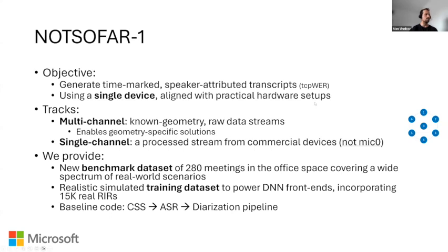We have two tracks. One track is the multi-channel track where you have an array with seven microphones and the geometry is known, so you can actually train for this setting. The second track is single channel, and here we emphasize real settings where we don't use just one single microphone — rather, we use the stream which is output from an actual device.